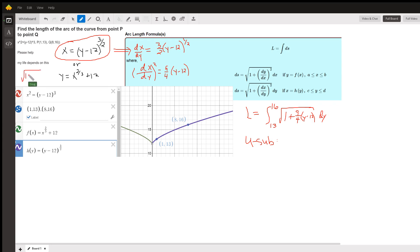1 plus, I think you get something like 4 ninths x to the minus 2 thirds. It's a very long, tedious process to find an anti-derivative for that.